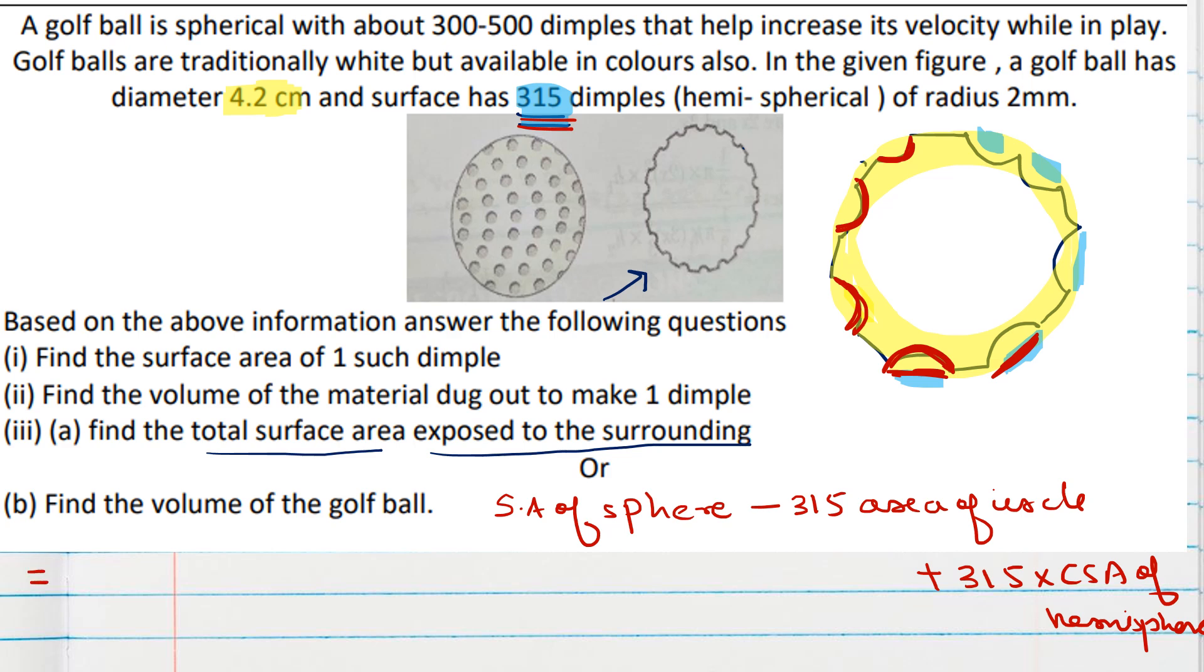So what we will do in this case? CSA of sphere means 4πr². I will take because for golf ball, diameter is different, radius is different. Here we can take area of circle and area of CSA of this hemisphere. Both will have same radii. So we can get 315 πr² and 315 into 2πr². So what we can do? We can take 315 common. And 2πr² minus πr² we will get. So finally we can subtract this.